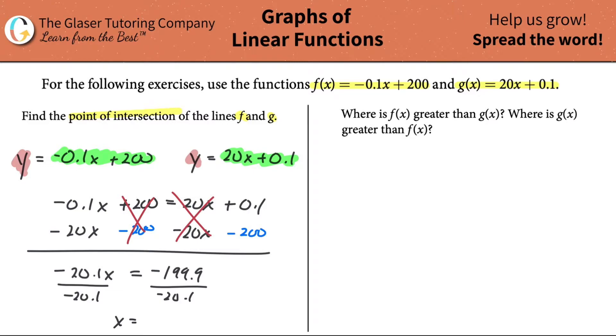And what is x going to equal? Let's take out that calculator. So negative 199.9 divided by negative 20.1. And we get about—I'm going to round this to two decimal places—about 9.95. So that's the x.